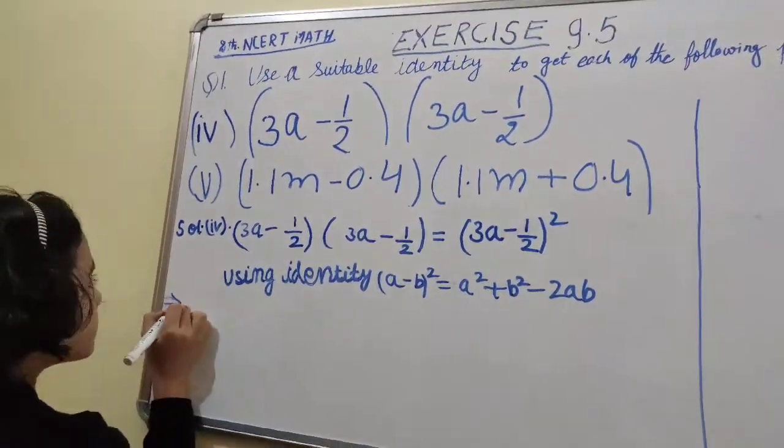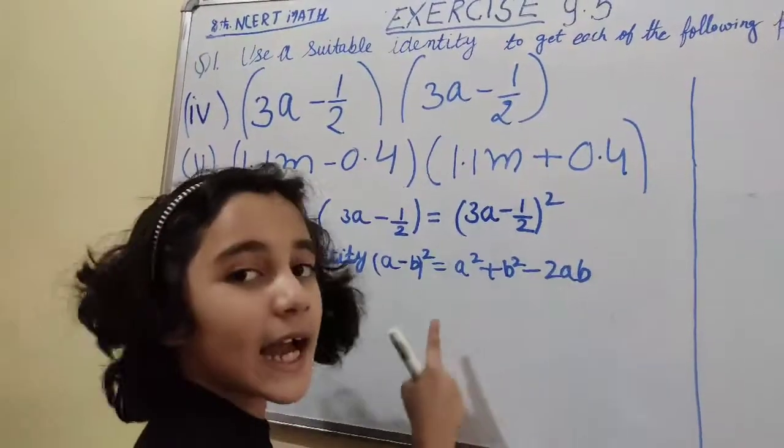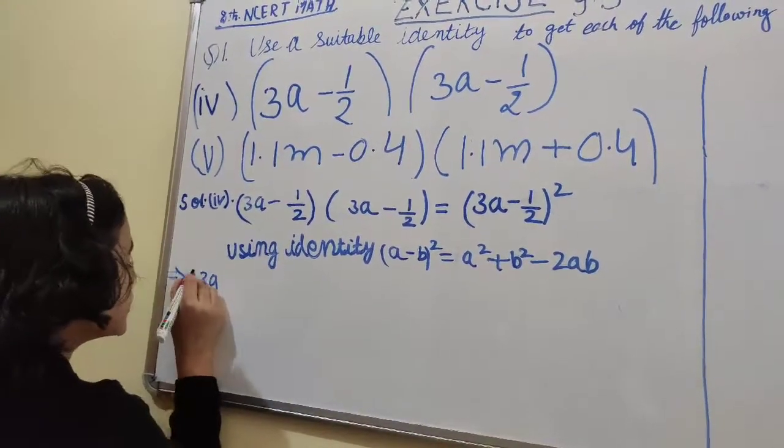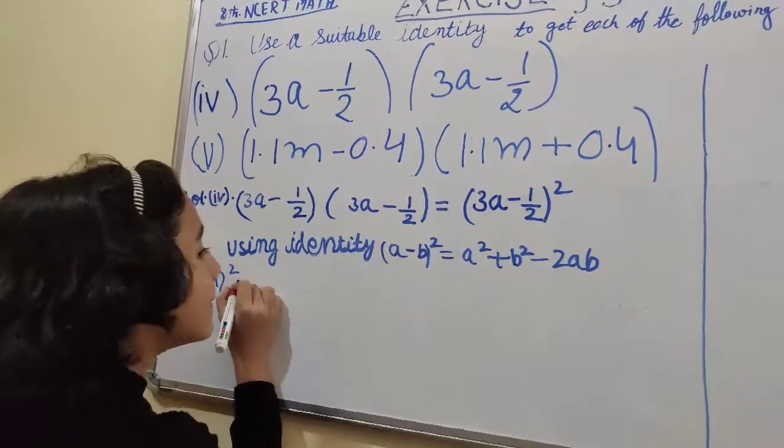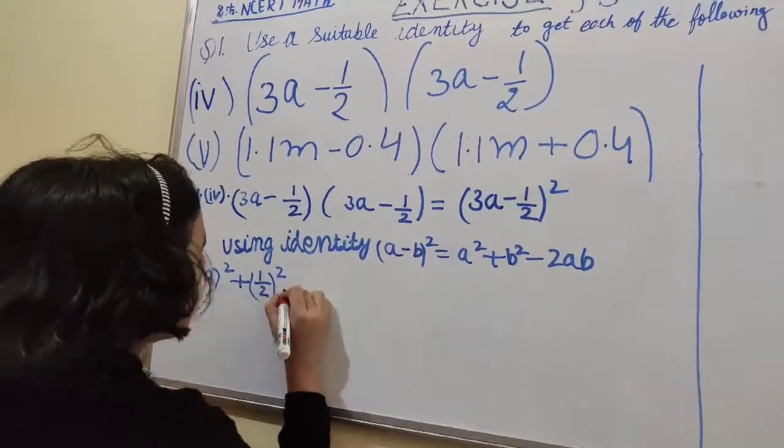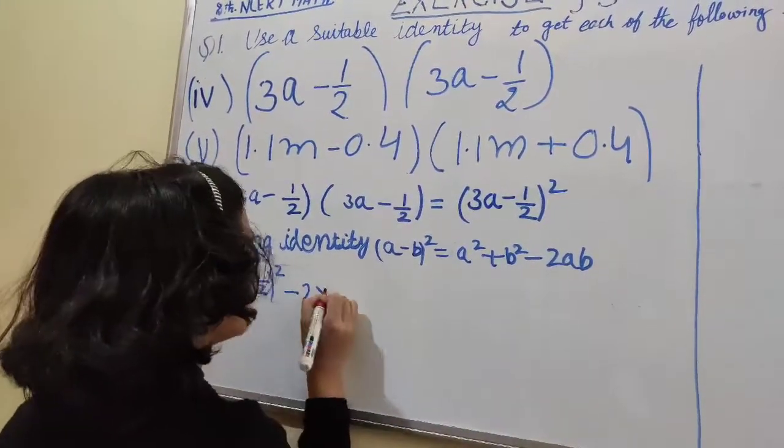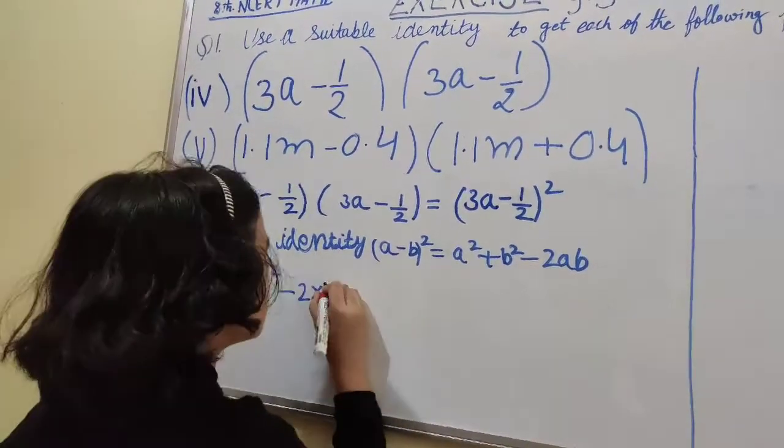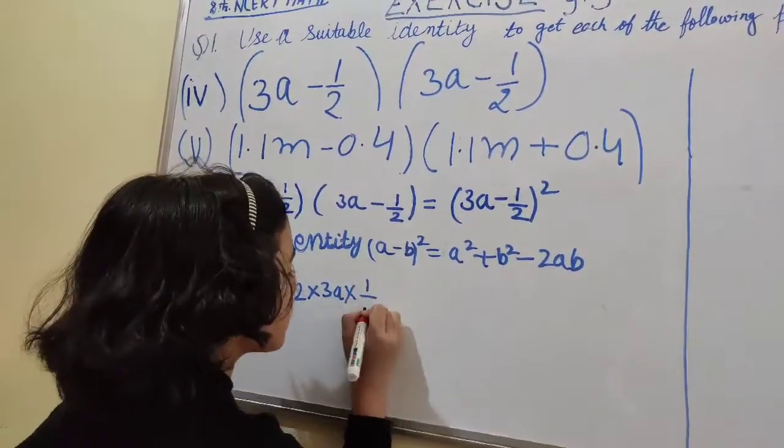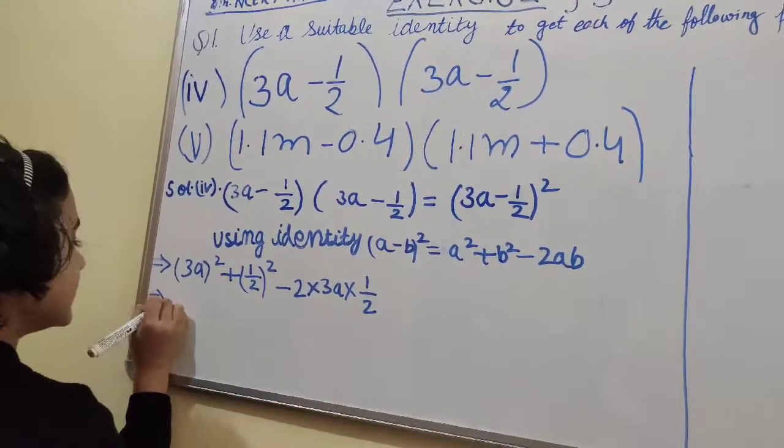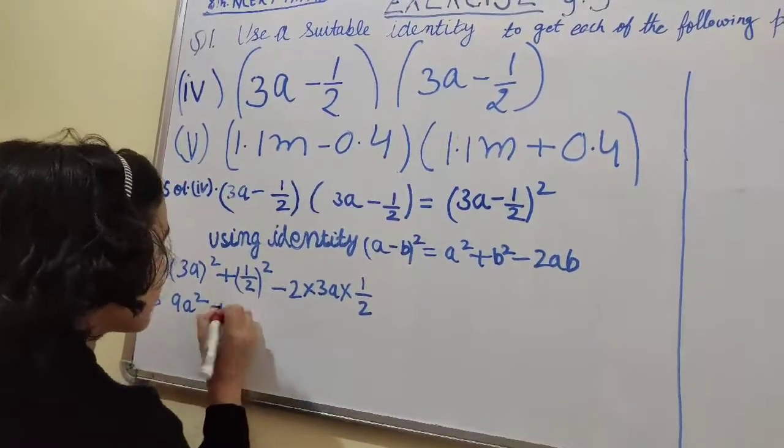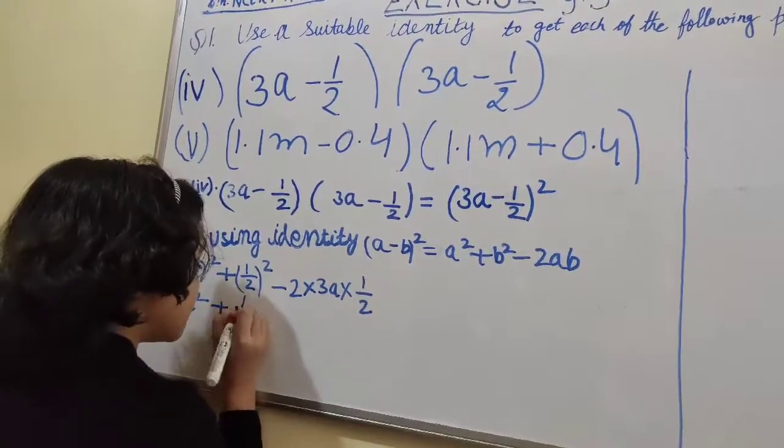Which implies, now we have to follow this identity. (3a - 1/2) whole square equals (3a)² plus (1/2)² which is 1/4.